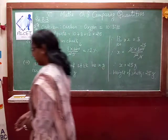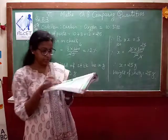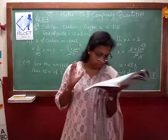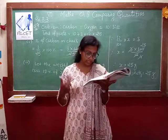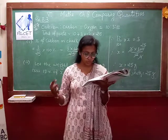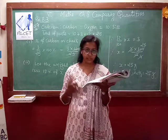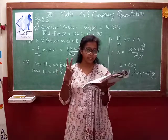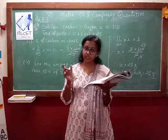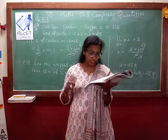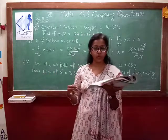Students, now move on to question number 7. The question is: chalk contains calcium, carbon and oxygen in the ratio 10:3:12. Find the percentage of carbon in chalk. This is the first part of the question. Second part: if in a stick of chalk carbon is 3 grams, what is the weight of the chalk stick? This is the second part of your question.